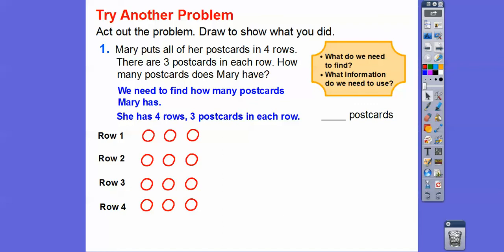We're going to add these up. We can add up the columns: here's four, here's four, here's four. Four plus four is eight. Eight plus four — use your fingers — eight, nine, ten, eleven, twelve. So there are twelve postcards. Or we can count each row: three plus three is six, six plus three is nine, nine plus three is twelve. Both ways we get twelve postcards.